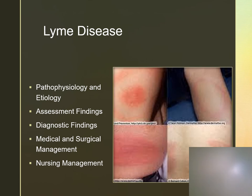Lyme disease is caused by the Borrelia bacterium. It's usually transferred to humans from ticks, which act as vectors to transmit the bacteria, and it's more common in the Northeast and Mid-Atlantic states. There are three basic stages. In stage one, we may see a red macule or papule at the bite site — the bullseye rash — fever, chills, malaise, or flu-like symptoms.